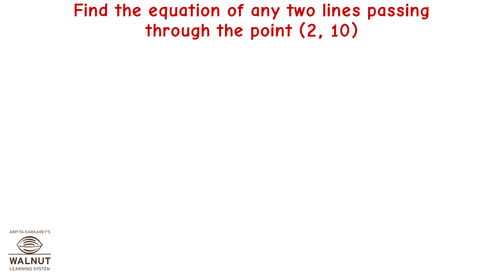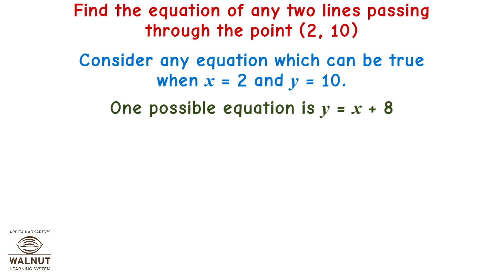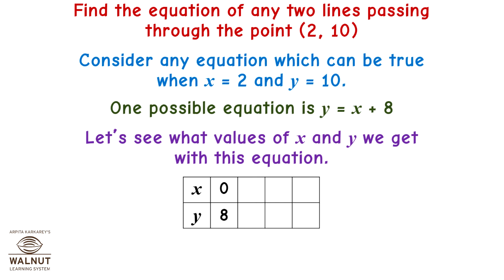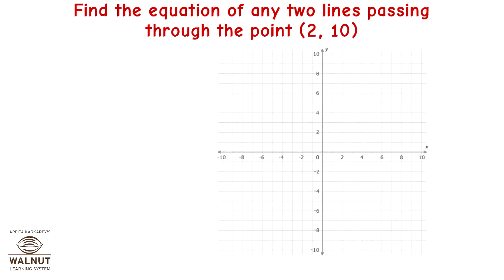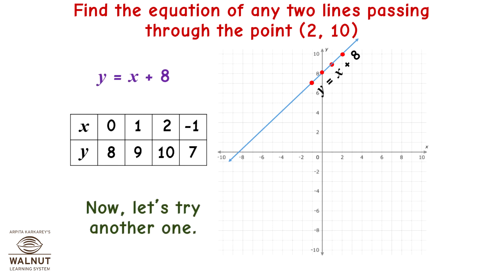Find the equation of any two lines passing through the point (2, 10). One possible equation is y = x + 8. Points on this line: (0, 8), (1, 9), (2, 10), (-1, 7). Let's plot these points and draw a line through them. That gives y = x + 8.